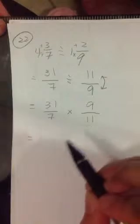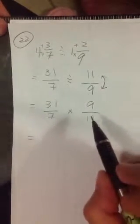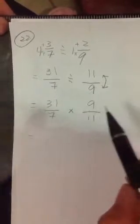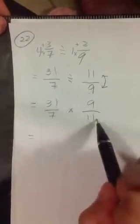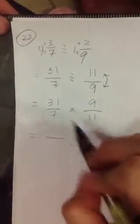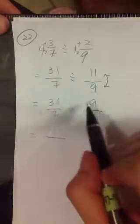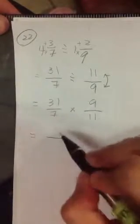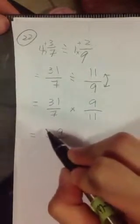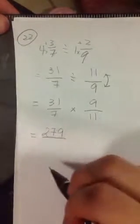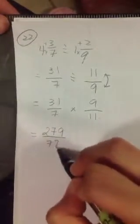So now we are doing 31 over 7 multiplied by the reciprocal of this which is 9 over 11. So now we can just multiply. We can try to see if there is anything that we can cancel. 7 and 9 doesn't go into each other, and 31 and 11 doesn't go into each other. So actually in this question, we won't be able to cancel anything. We will just multiply top and top. 31 times 9 gives us 279 over 7 times 11 which would be 77.